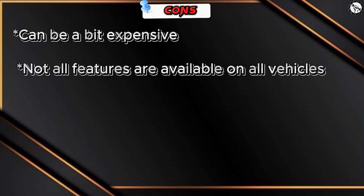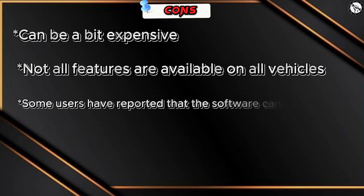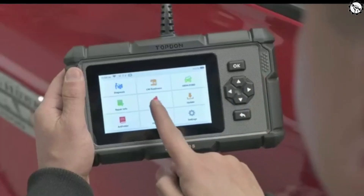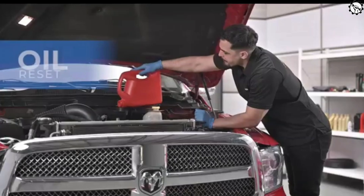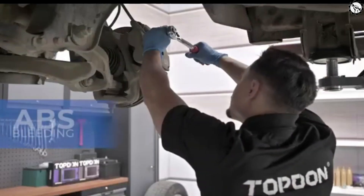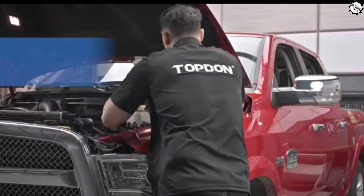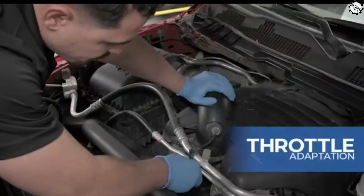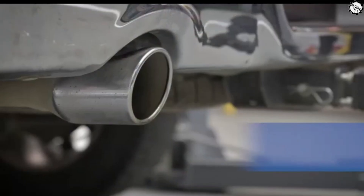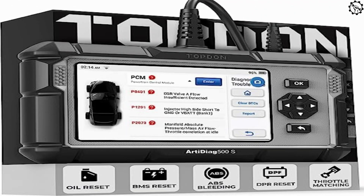Cons: it can be a bit expensive, not all features are available on all vehicles, and some users have reported that the software can be unstable. Overall, the Topton AD 500S is a powerful and versatile OBD2 scanner that's easy to use, compatible with most vehicles, and comes with free lifetime updates.